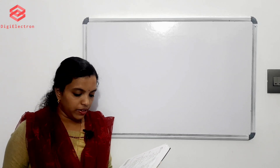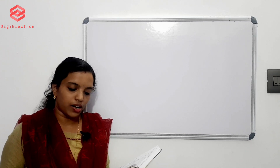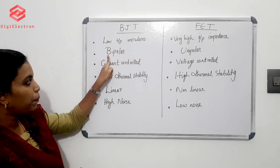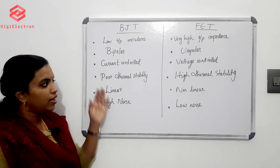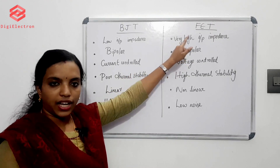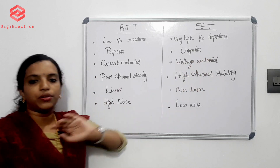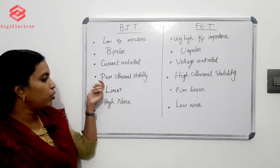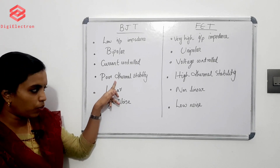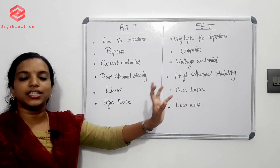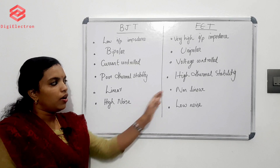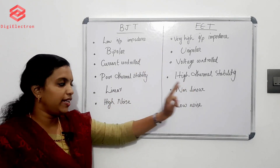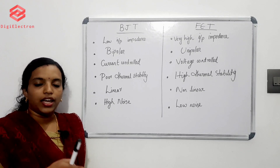Next is part B: compare BJT and FET. The difference between BJT and FET — BJT has low input impedance and is a bipolar device, which means BJT is a current-controlled device. FET is a voltage-controlled device. BJT has poor thermal stability, while FET has high thermal stability. BJT is linear and FET is non-linear. BJT has high noise and FET has low noise.